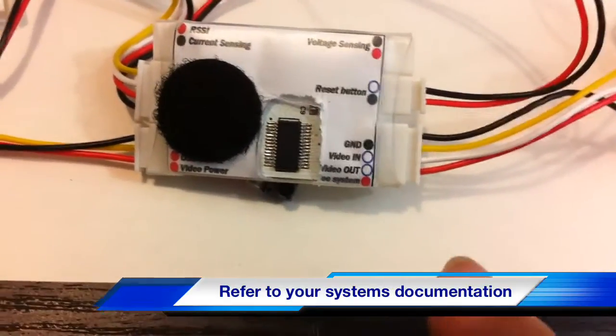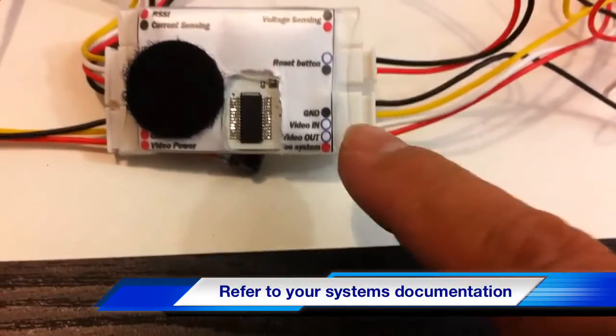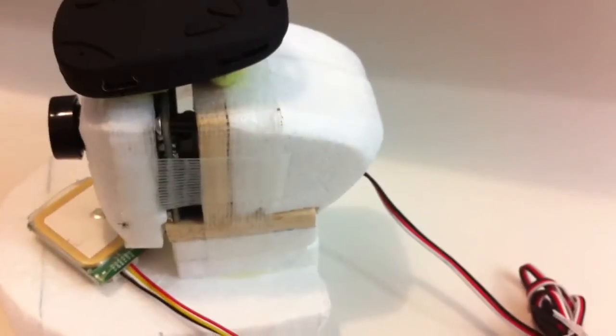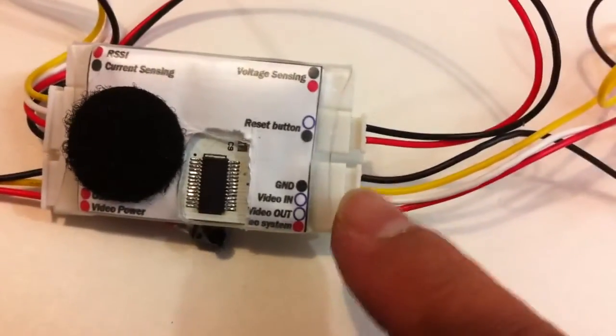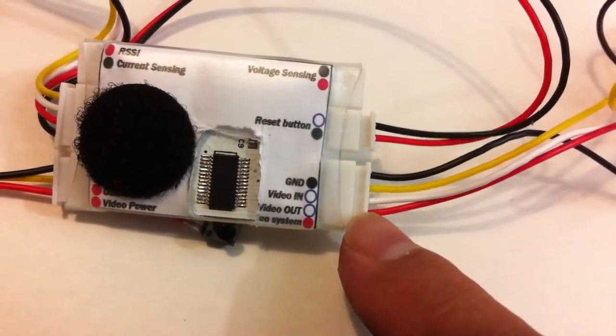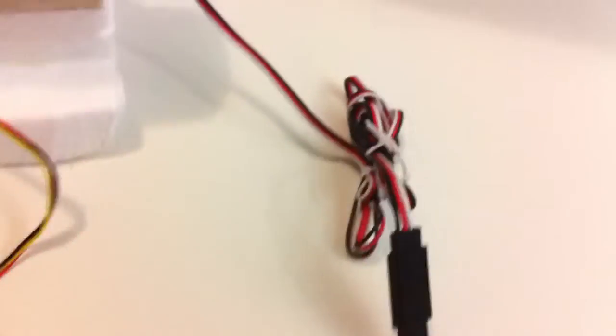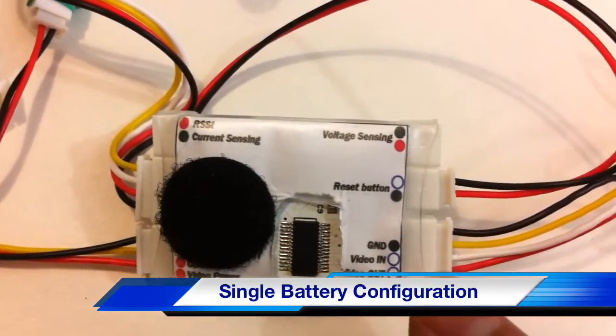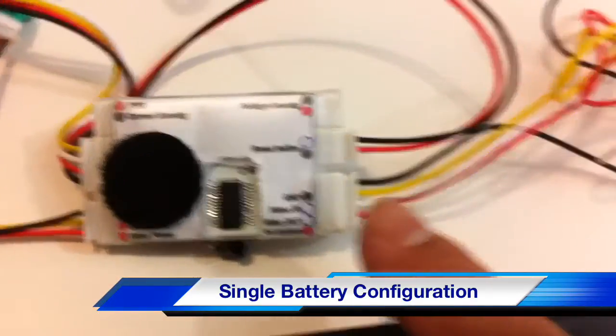Now that comes all the way through into this part of the on-screen display. So basically what we've got is the yellow wire which is the video in is coming from the camera which is the white wire. Obviously we have the positive and the negative but are also connected to the camera so they're being fed into here.